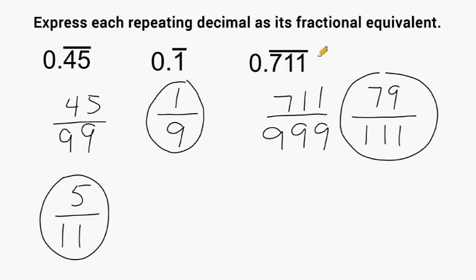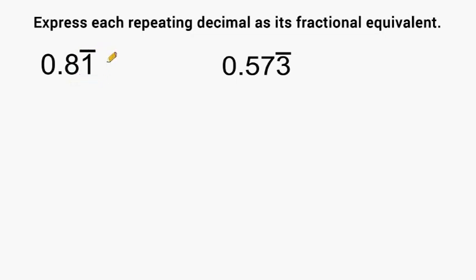Now let's do an example where we have some digits that are not underneath the repeating bar and some digits that are underneath the bar. This example has a digit that is not underneath the repeating bar and a digit that is underneath the repeating bar. That means we have a combination of fractions that will result in point eight repeating one.